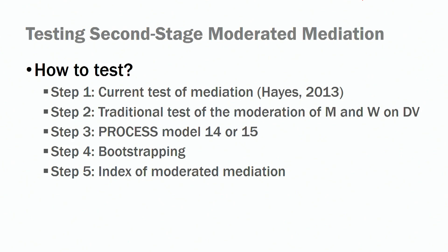Then we do a traditional test of the moderation of the mediator and the moderator on the dependent variable. Then we look at the process models — I would recommend you adopt model number 15 in this case. Model 14 and 15 are pretty similar, but let's stick with 15 and I'll explain that shortly.